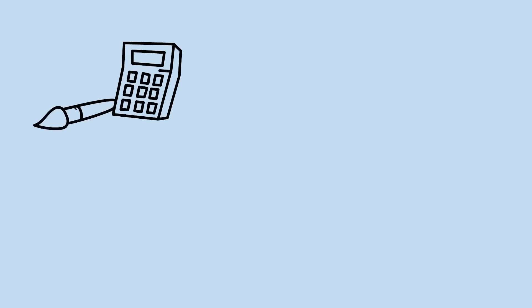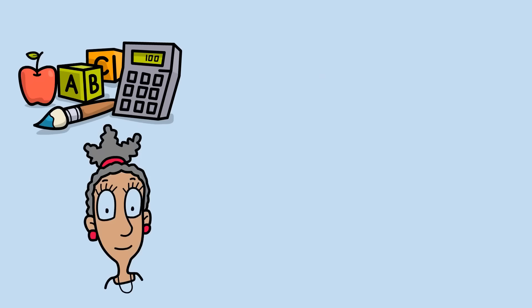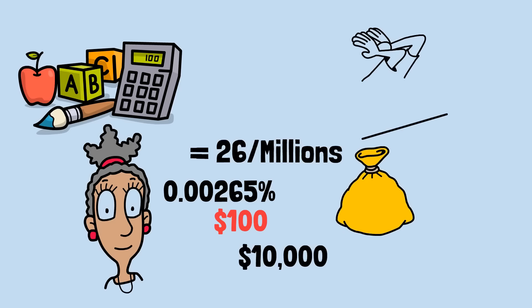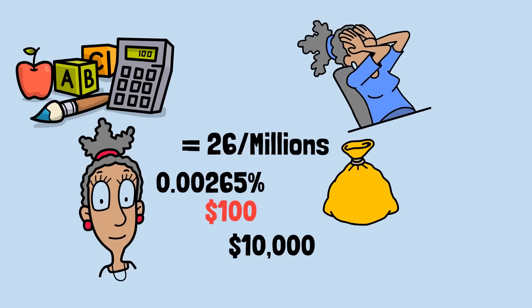Here's where mathematics delivers its first surprise. Alice has only a 0.00265% chance of winning $100. That's not a typo. It's about 26 chances in a million. Despite her $10,000 bankroll and conservative approach, it's almost certain she'll lose everything before making her modest profit.